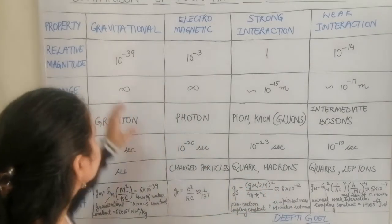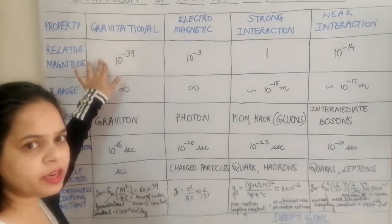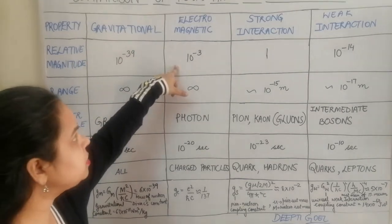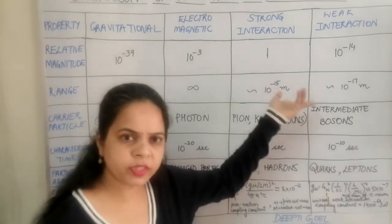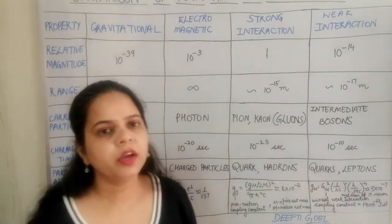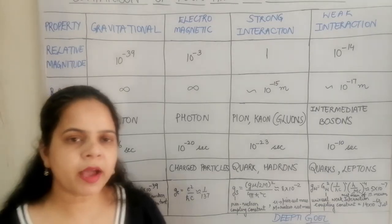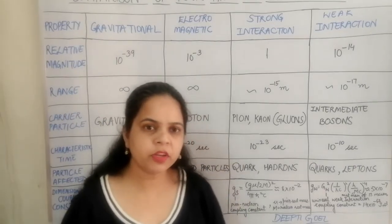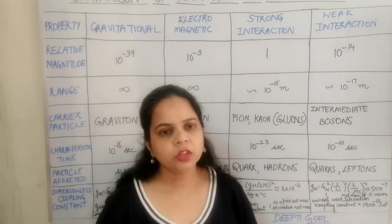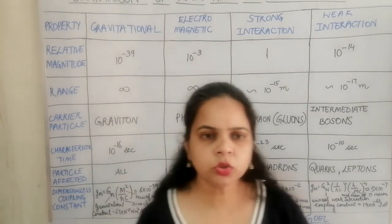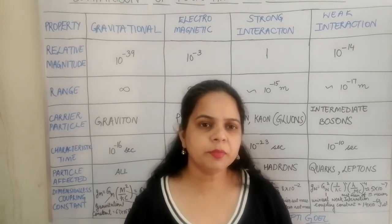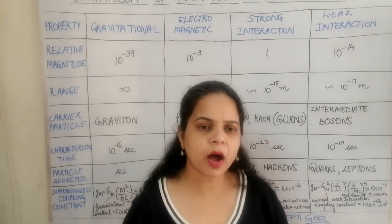Gravitational forces are always attractive in nature. Electromagnetic forces can be both attractive and repulsive. Strong interactions are always attractive, and weak interactions are also attractive. So only electromagnetic interactions can be repulsive, while all the rest are attractive in nature. I hope you have understood the four types of interactions exhibiting in this universe between particles.